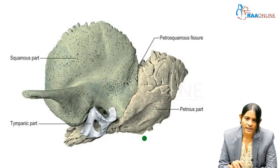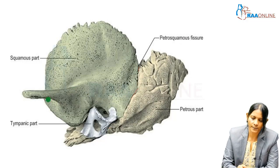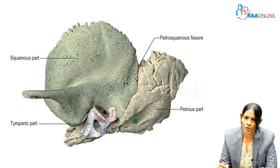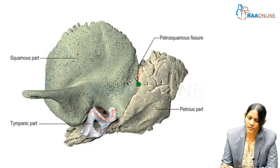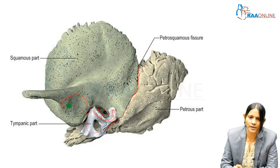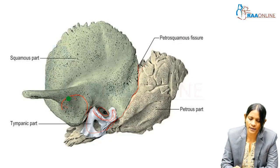This is a magnified view of the temporal bone showing the squamous part, the zygomatic process of the temporal bone, the tympanic part, the tympanic plate, and the external acoustic meatus. This is the petrous part of the temporal bone. The mastoid and styloid parts are not shown here. This is the fissure between the squamous part and the petrous part called the petrosquamous fissure, which continues further down as the petrotympanic fissure.